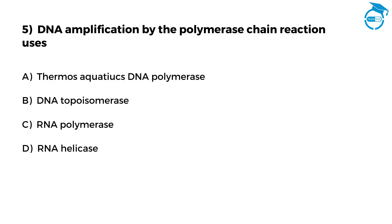Here is the next question. Let us see if you know the answer. DNA amplification by the polymerase chain reaction uses. Option A, Thermus aquaticus DNA polymerase. Option B, DNA topoisomerase. Option C, RNA polymerase. Option D, RNA helicase.